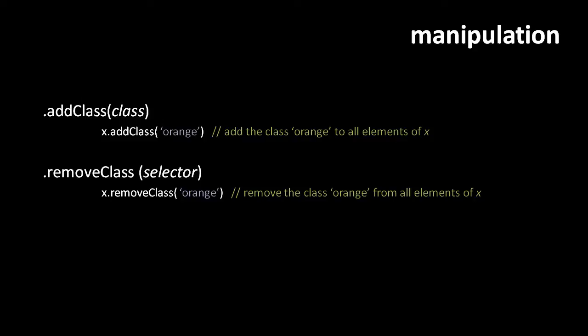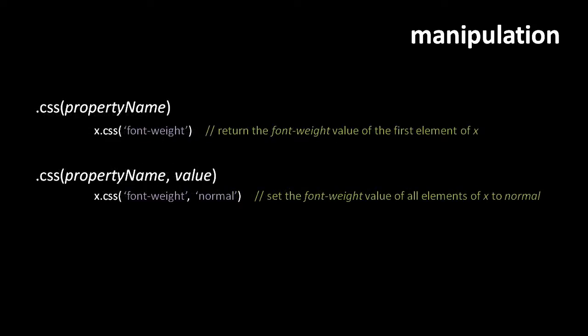DOM elements have properties which reflect CSS properties, but the best way to get and set these in jQuery is the css method. Calling x.css('font-weight') returns the font-weight property value of the first element in x. To set a CSS property, provide a second argument — x.css('font-weight', 'normal') sets font-weight to normal for all elements in x. Again, getting returns a value for the first element, while setting applies to all elements in the jQuery object.